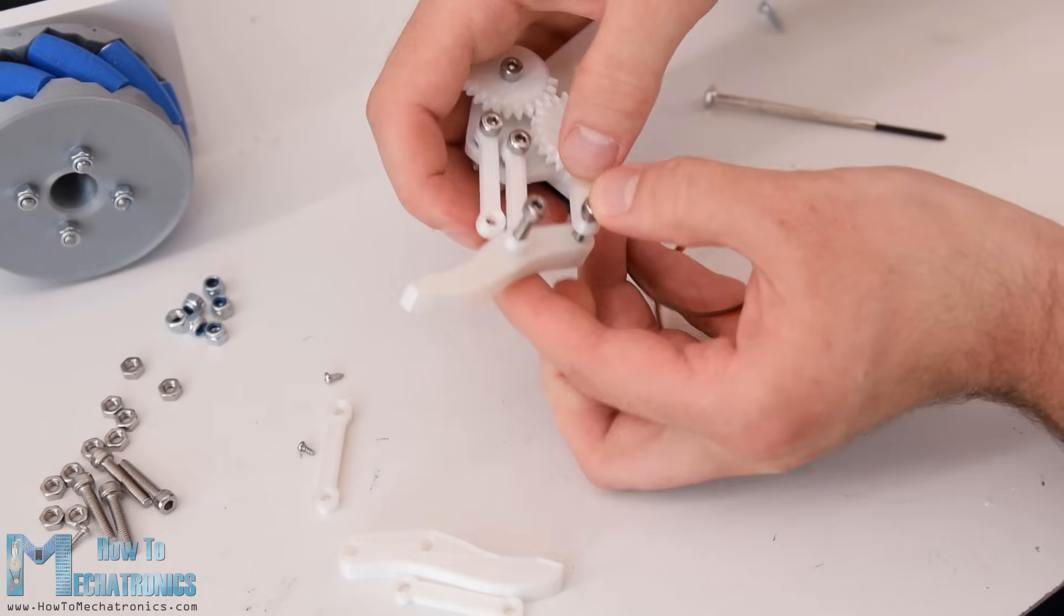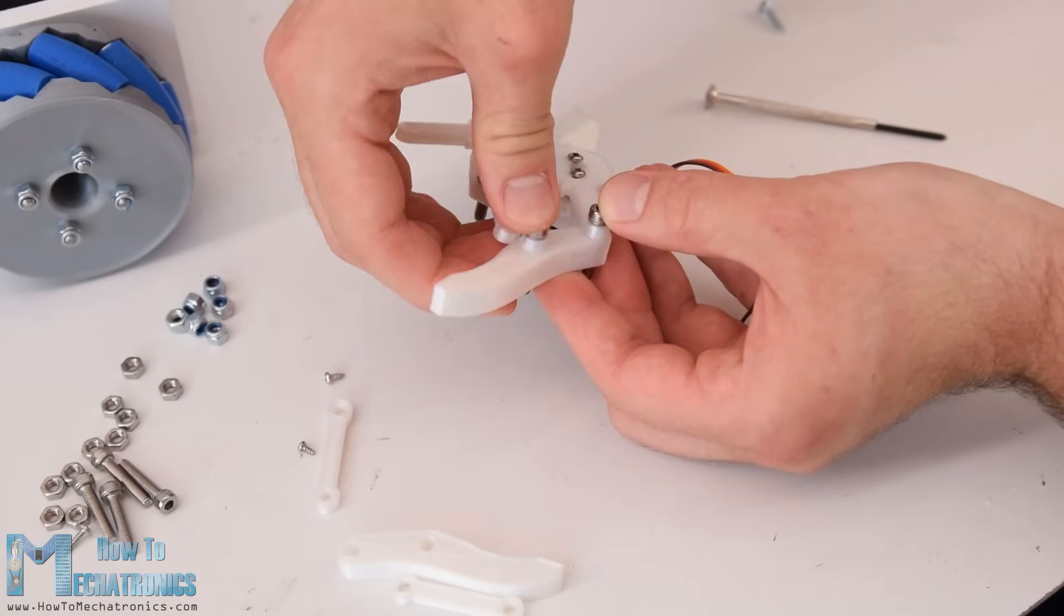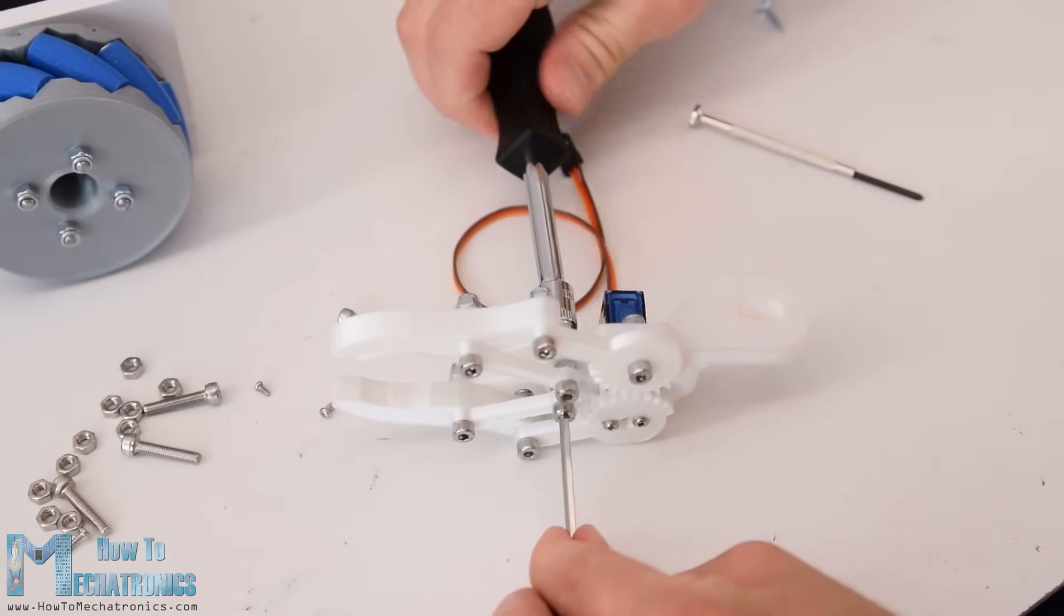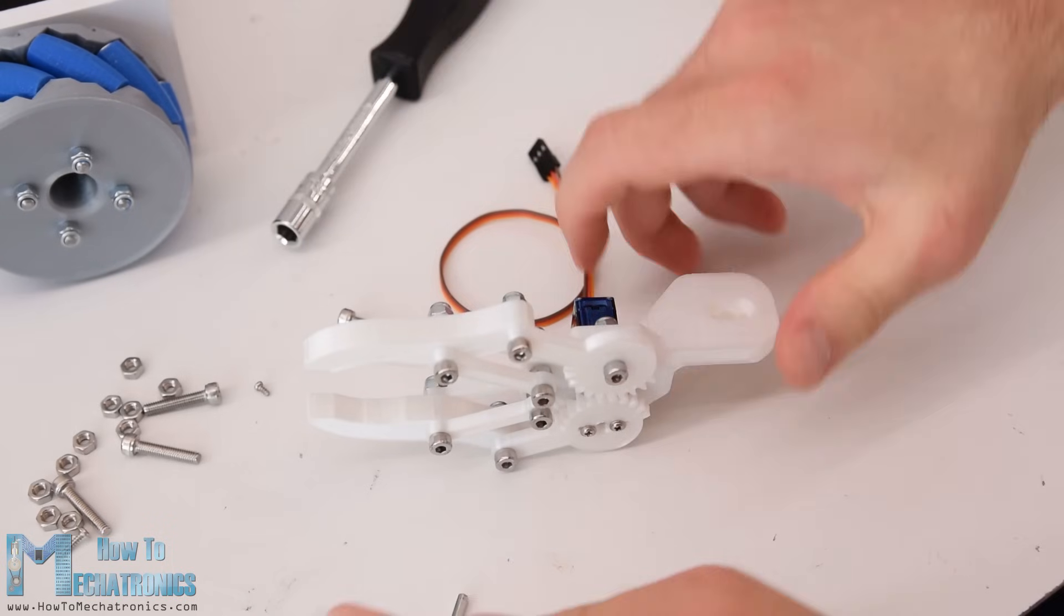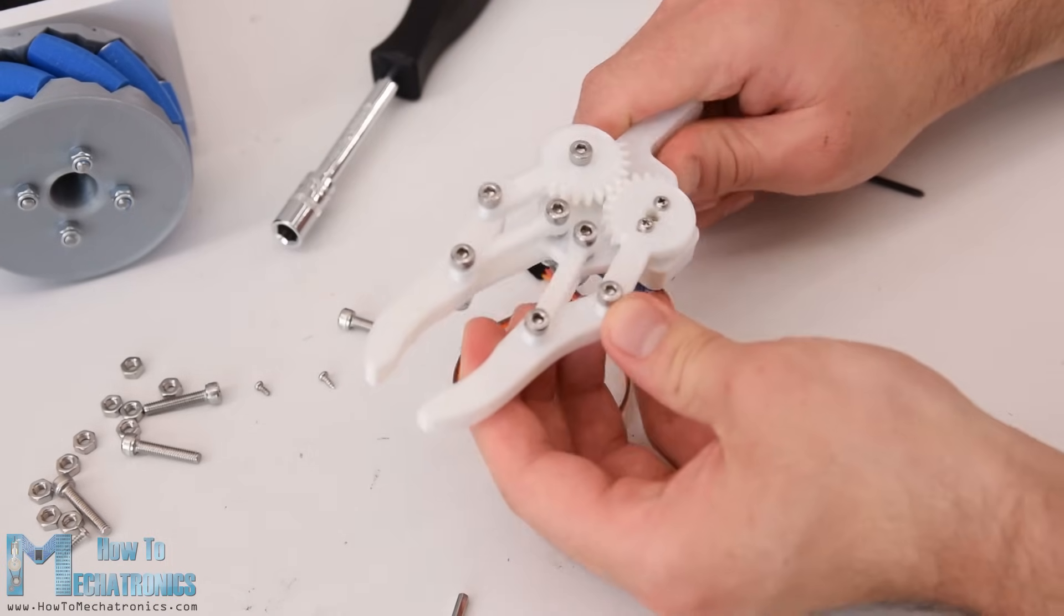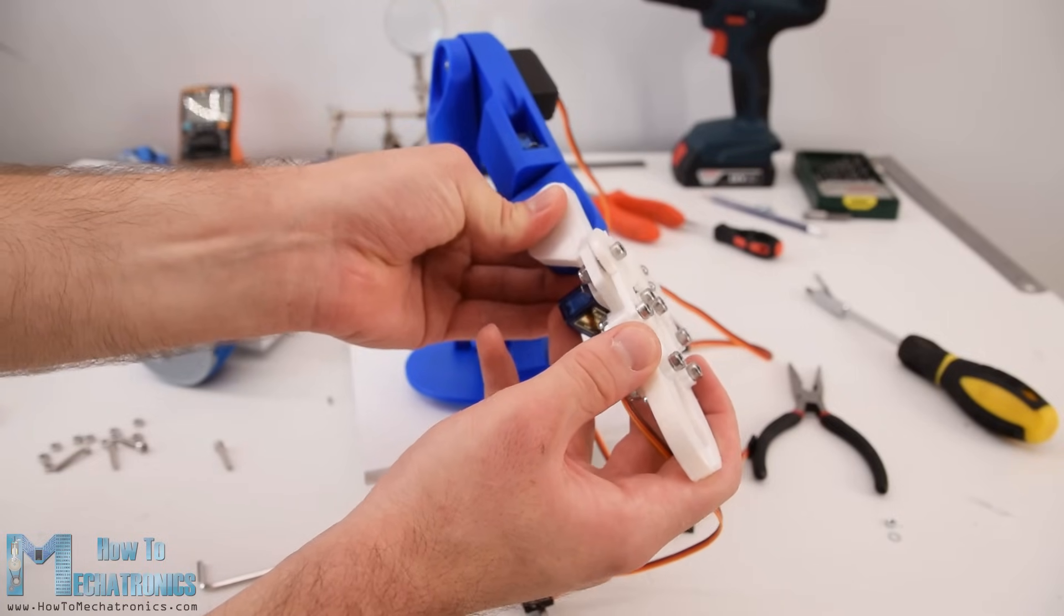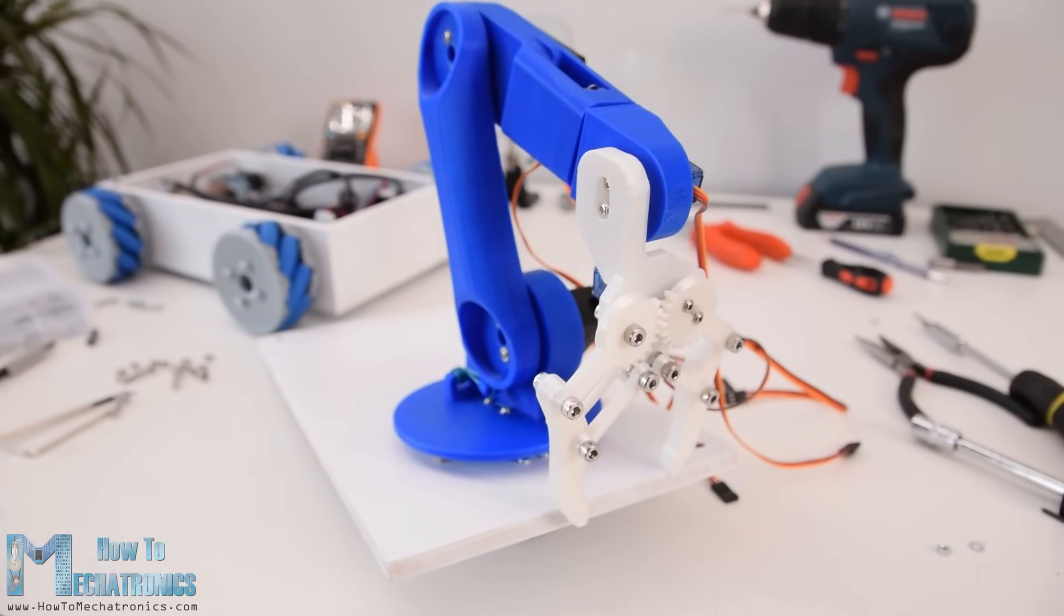The 3D model of the gripper originally has 3mm holes, but I didn't have enough M3 bolts, so therefore I expanded the holes using 4mm drill and used the M4 bolts instead. Once I assembled the gripper mechanism, I secured it to the last servo and so the arm was completed.